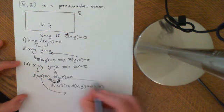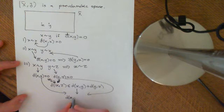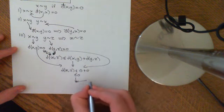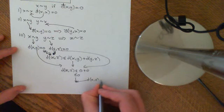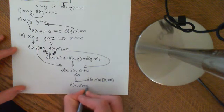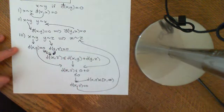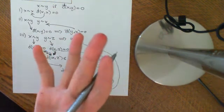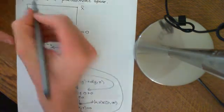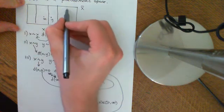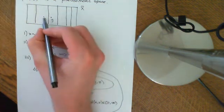Plugging in our information, we get d̄(x, z) ≤ 0 + 0 = 0. Applying axiom one of a pseudo-metric space — that the distance between any two elements is non-negative — this implies d̄(x, z) = 0, which implies x is related to z. So we have transitivity, and now we know this equivalence relation works and we can split the pseudo-metric space up into equivalence classes.